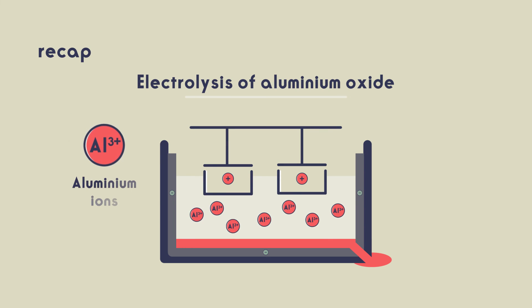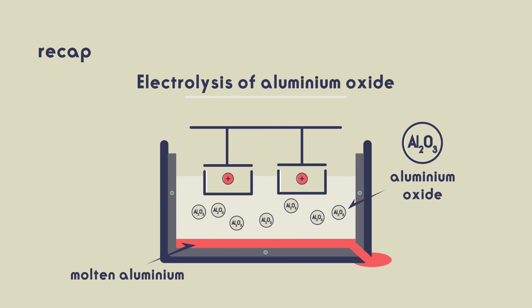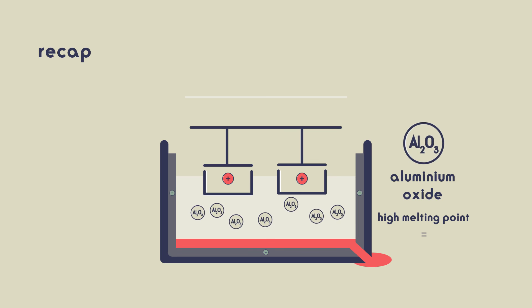So, from this video, you should know that to extract aluminium, electrolysis is used. Aluminium oxide needs to be molten for the ions to move through it, and so is dissolved in cryolite to lower the melting point.